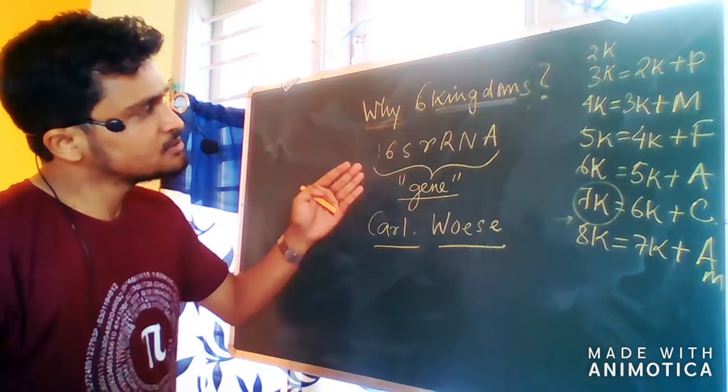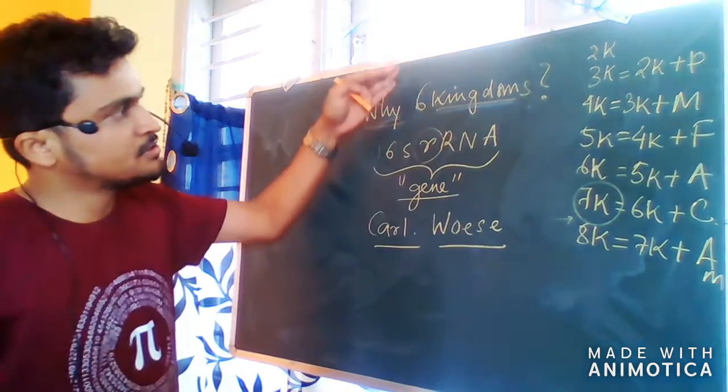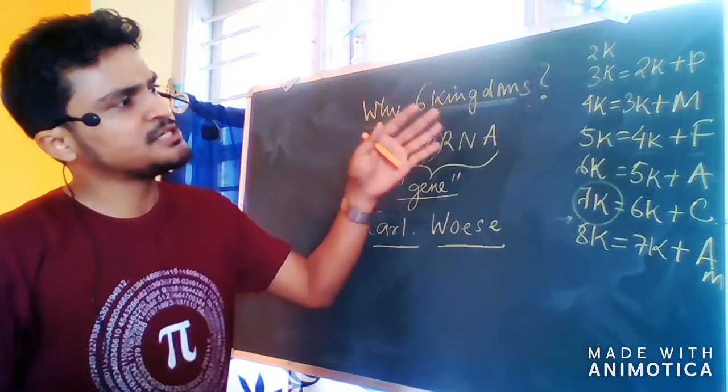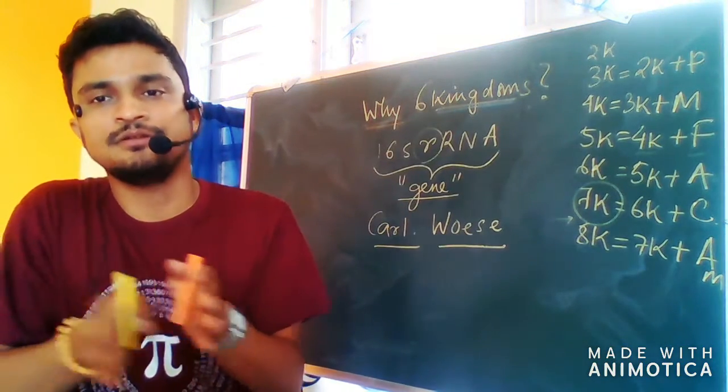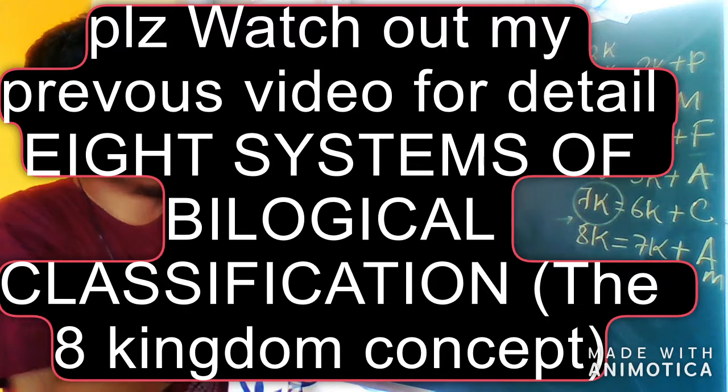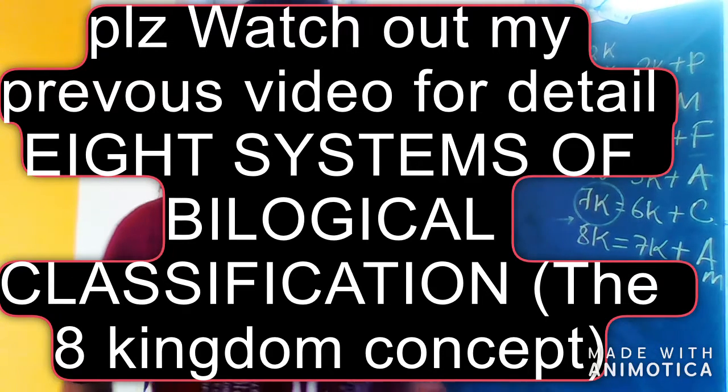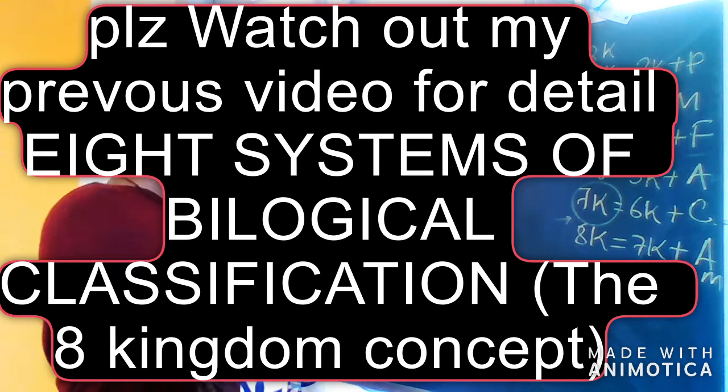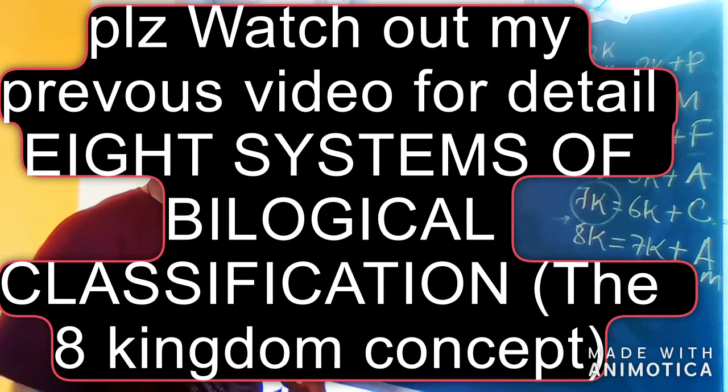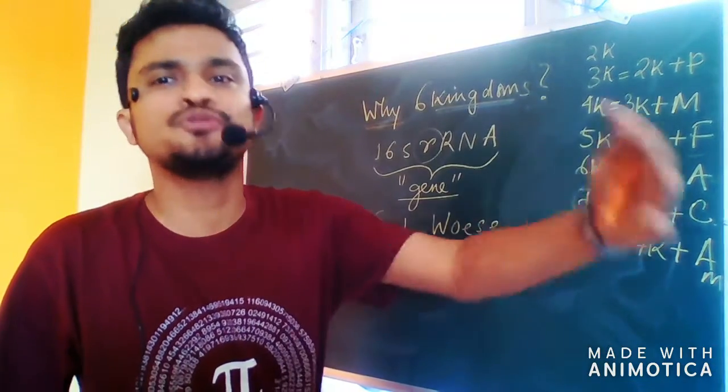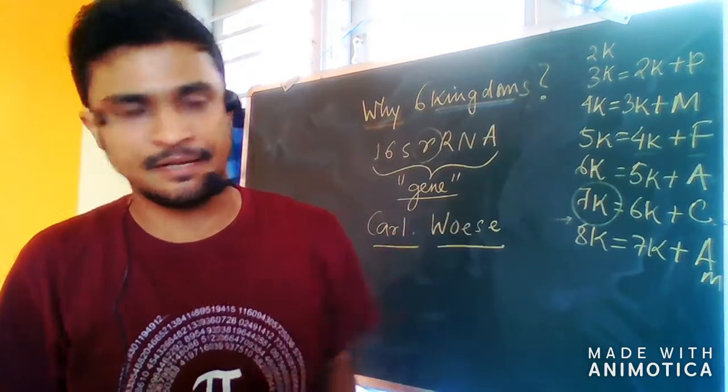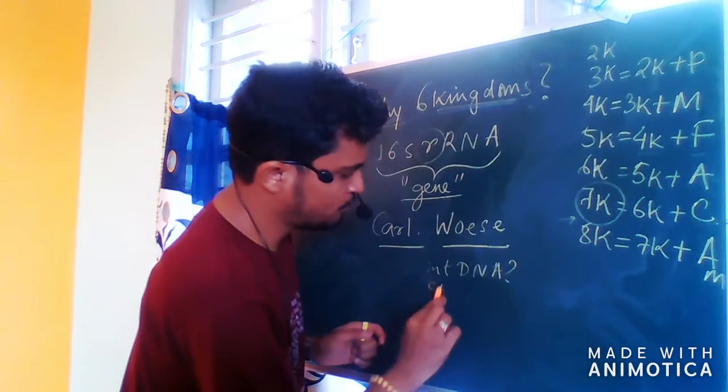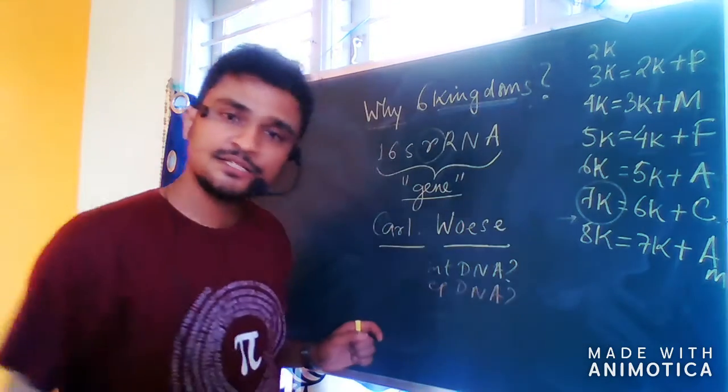He took 60S ribosomal RNA for the six kingdom classification. He split bacteria into five or six different kingdoms. More importantly, he split bacteria on the basis of 60S ribosomal RNA. Sometimes you can ask me why ribosomal RNA was taken, why not mitochondrial DNA or chloroplast DNA?